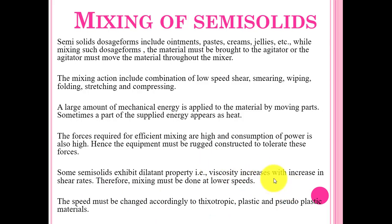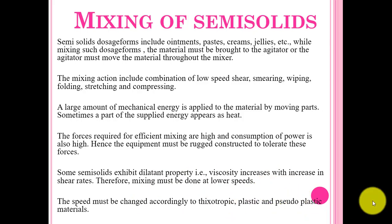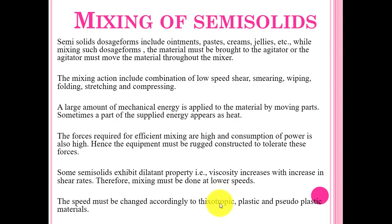The speed must be changed according to the main factors: whether the material is thixotropic, plastic, or pseudoplastic. According to the type of viscosity — thixotropic, plastic, or pseudoplastic — the viscosity differs, so we can change the speed of mixing accordingly.